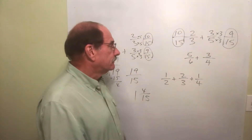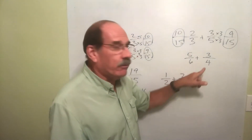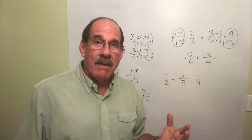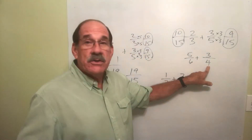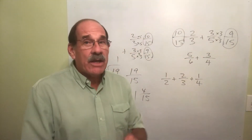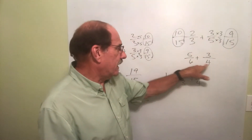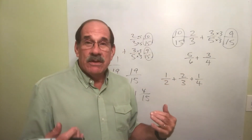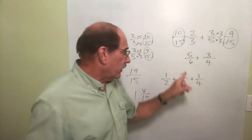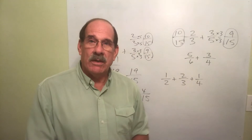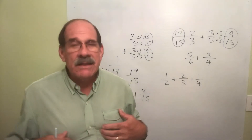Wow, another one — isn't this fun? 5/6 plus 3/4. They don't have the same denominator, so I've got to make them the same. Can I enlarge the 4 — since that's the smaller one — into a 6? No, I can't. I could multiply 4 times 6 to get 24 and make that my common denominator, but I don't need to. Can't I enlarge both of these into the number 12? Yes, I can.